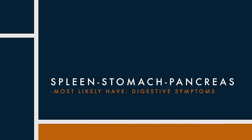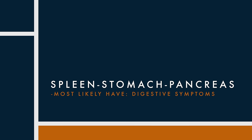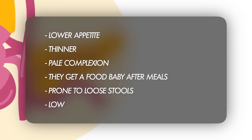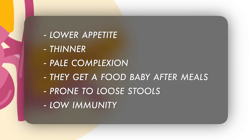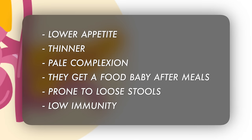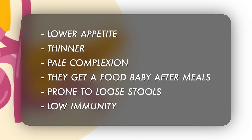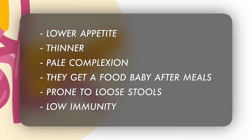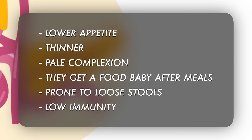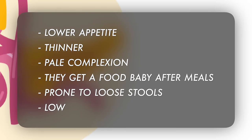Organ network number one: the spleen, stomach, and pancreas. With a diagnosis of spleen qi deficiency, the symptoms primarily revolve around the digestive system. The textbook person typically has a bit lower appetite, is thinner with a more pale complexion, gets a food baby after meals, is prone to loose stools, SIBO, and gut dysbiosis issues. Sometimes they also have low immunity and catch colds easily.